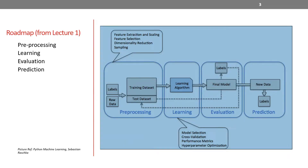We looked at this roadmap in lecture one — these are different parts of any machine learning implementation. The first one was preprocessing, then the actual learning, then evaluation, and finally prediction. As you can see in the picture, preprocessing is an integral and important part of any machine learning implementation. So in this video, we're going to get started with that. Data preprocessing itself involves multiple steps.